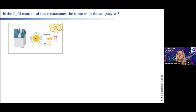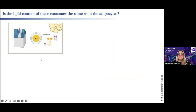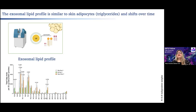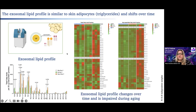We also wanted to confirm that these extracellular vesicles contain the same types of lipids that are inside the adipocytes. We performed an untargeted lipidomics and saw that the extracellular vesicle lipid profile was very similar to what we found in skin adipocytes. Very curiously, this lipid profile appeared to be regulated as the wound bed progresses, and is completely impaired during aging.